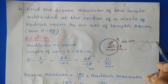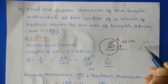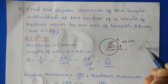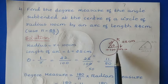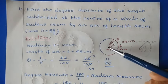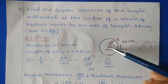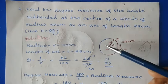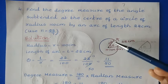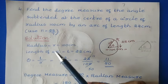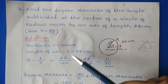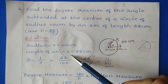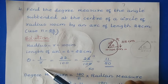There is a circle with radius 100 cm and arc length 22 cm. When we know the arc length and radius, we can join those lines and the angle produced is theta. We need to find theta in degree measure. The radius r = 100 cm, and the arc length L = 22 cm.